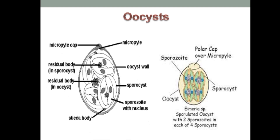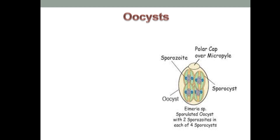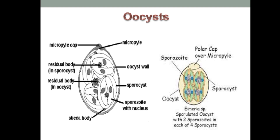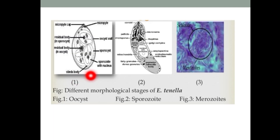The infective stage is known as the oocyst, and each oocyst contains spores called sporocysts. It is tetrasporic, meaning there are four sporocysts, and each sporocyst contains two sporozoites. So one oocyst contains four sporocysts, each containing two sporozoites. The structure also shows sporozoites and merozoites.